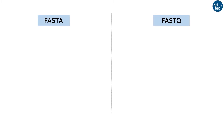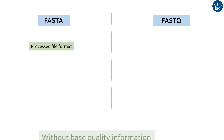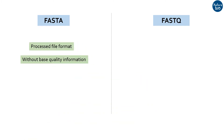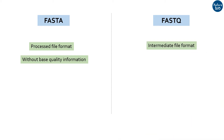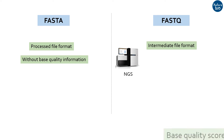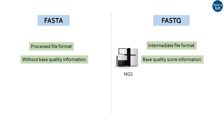FASTA and FASTQ are the file formats in which sequence data is stored. FASTA format is generally the processed file format without base quality information, while the FASTQ format is the intermediate file format that is generated by next generation sequencers and contains quality scores of the base sequence.